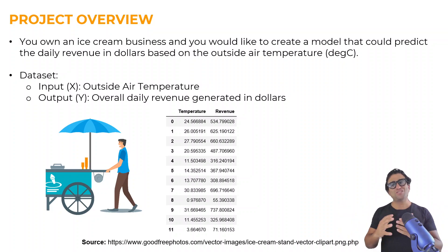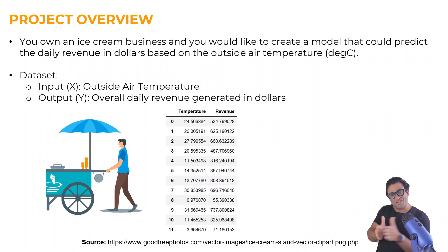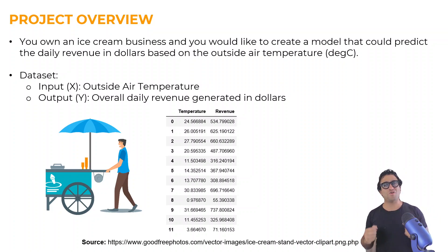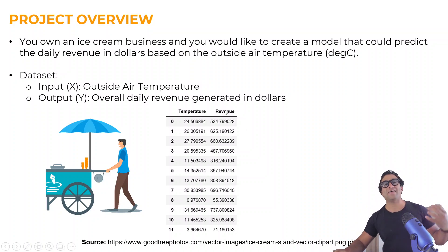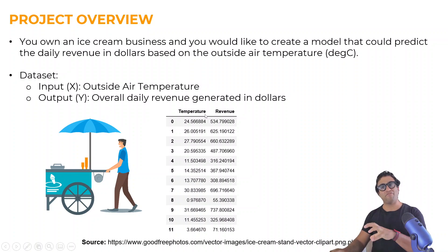As a business owner, you go ahead and collect a bunch of data. For example, today the temperature was 24.5 degrees C and at the end of the day the overall revenue accumulated was around $534. The next day the temperature was 26 degrees C and the corresponding revenue was $625. You kept repeating that over and over again and came up with a table containing two columns: the temperature and the daily revenues in dollars. This is the dataset we're going to use in this project.